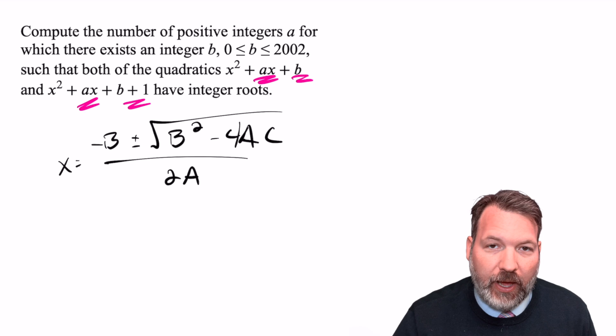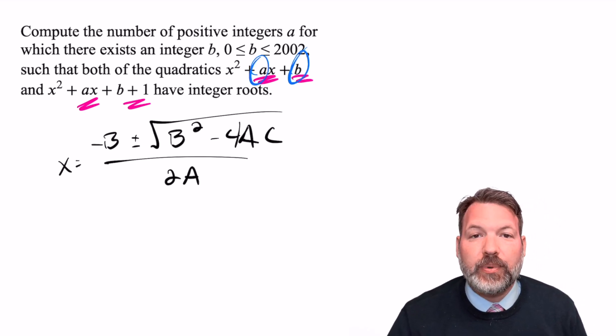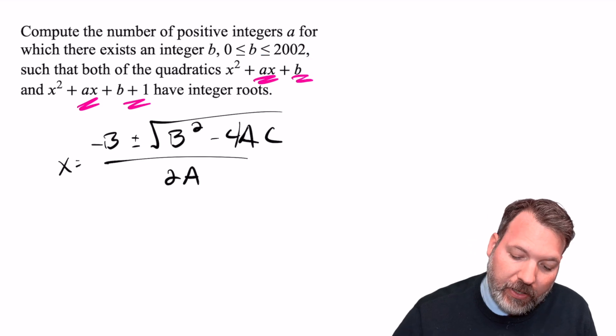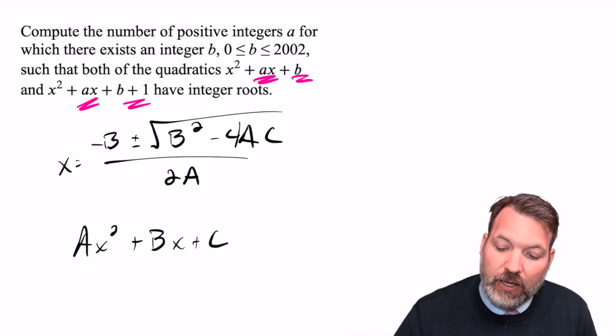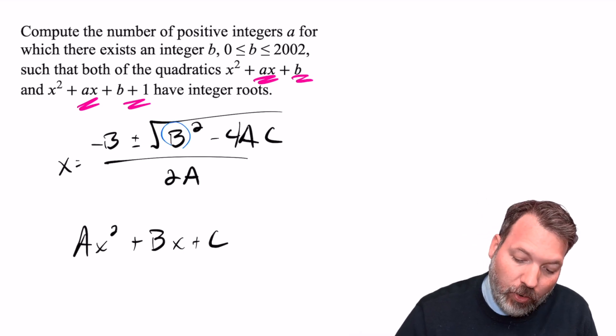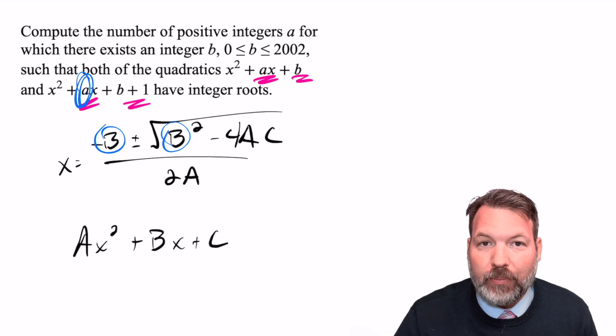Remembering, of course, that our A, B, and C here don't necessarily correspond to whatever random A and B the problem has, but instead we're talking about the trinomial Ax² + Bx + C.